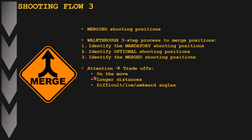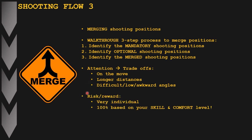There are some important trade-offs to be aware of when merging shooting positions. First, we will be required to engage more target arrays and targets on the move — moving forwards, backwards, left, and right. We'll have to cover longer distances from our shooting position to the targets, and we will be shooting at more difficult, low, or awkward angles to ensure we can see and engage the different target arrays on the stage.